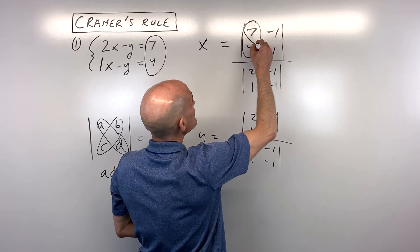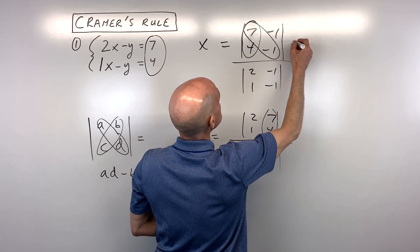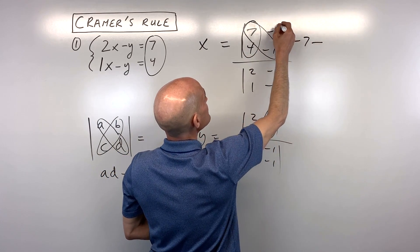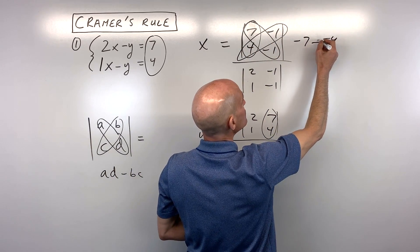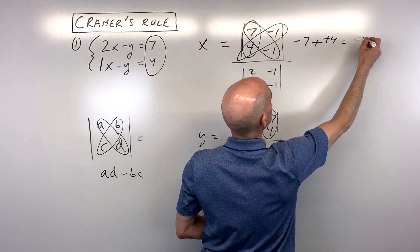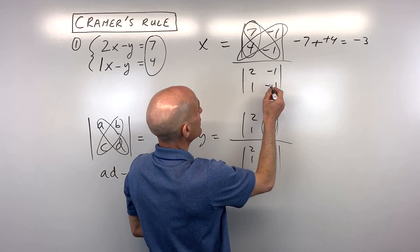So over here what we have is 7 times negative 1, which is negative 7, minus negative 1 times 4, which is negative 4. Of course, when we subtract, that's like adding the opposite.